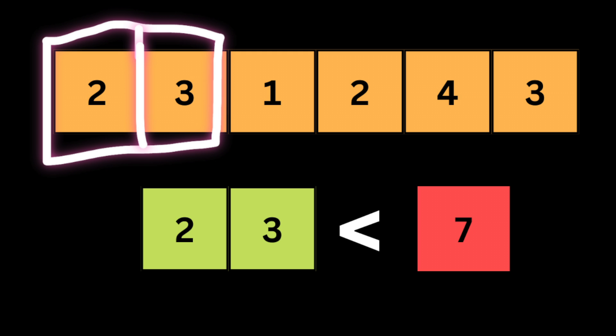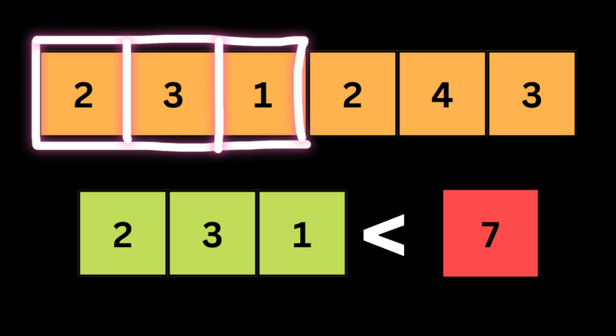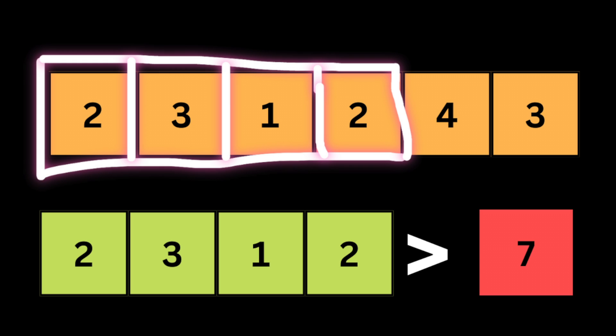Two plus three is five. If the sum of the numbers in the window is less than the target — which is seven — we need to make the window larger and move on. So we add the next number to the window: the window now has two, three, and one, and the total is still smaller than the target. So we expand the window again by adding the next number, making the total eight.